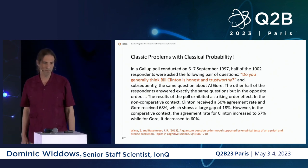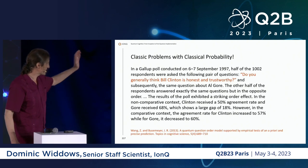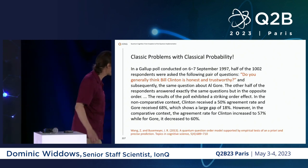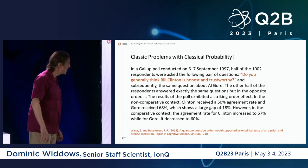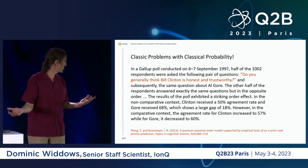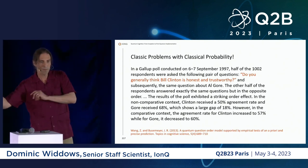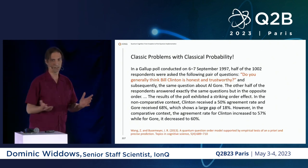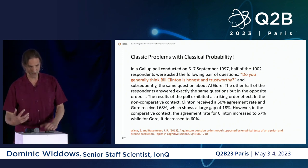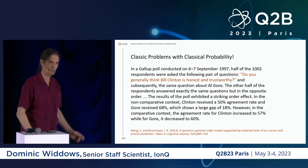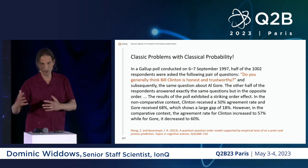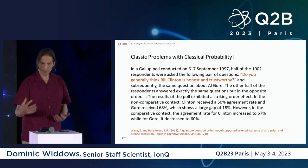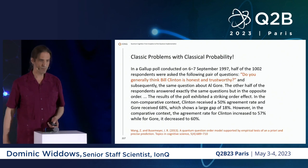What do I mean by classic problems with classical probability? In a Gallup poll conducted in the 1990s, half the respondents were asked whether they generally thought Bill Clinton was honest and trustworthy. The other half were asked about Al Gore first. The proportion who said Clinton was trustworthy was larger when they were asked about Al Gore beforehand — and vice versa. This may not surprise you intuitively, but it's a problem for classical probability.